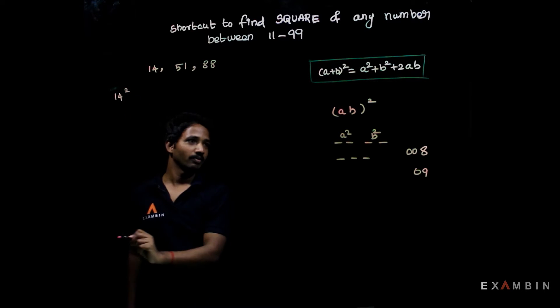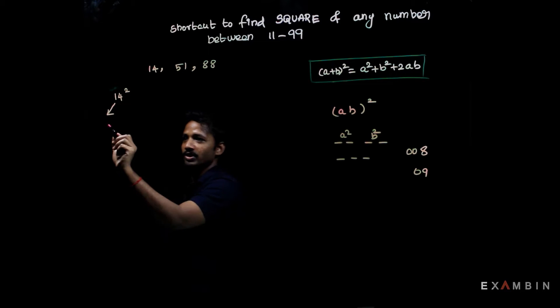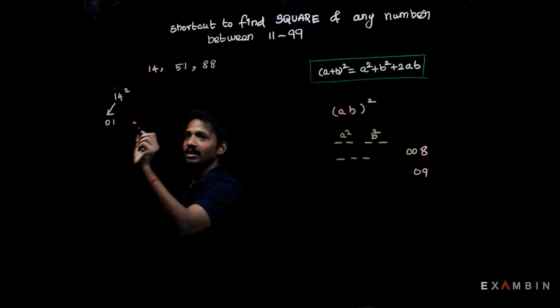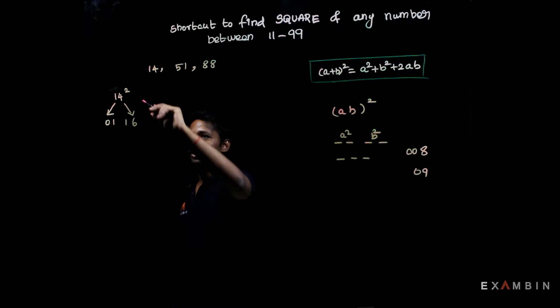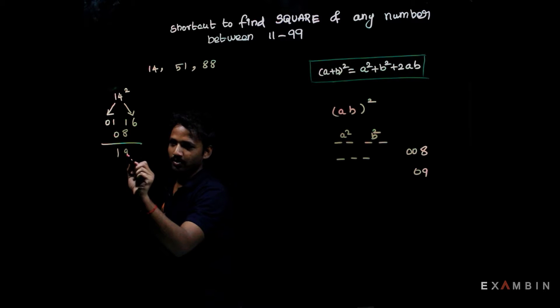14² is equal to: first we need to calculate 1² value, 1² is equal to 01. 4² is equal to 16. Then 2ab: 2 × 1 × 4 = 8. So the answer would be 196.